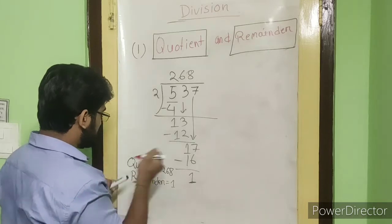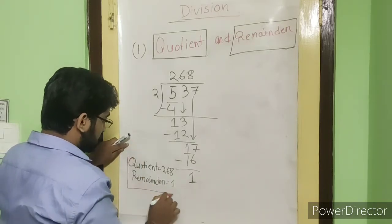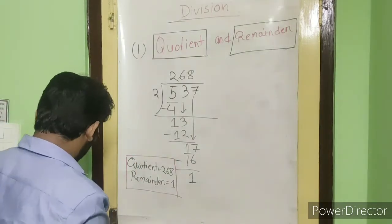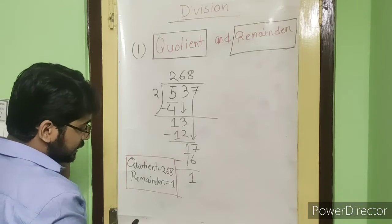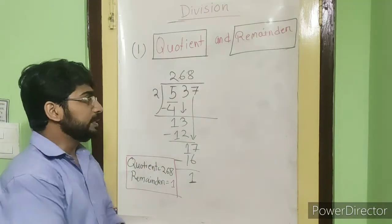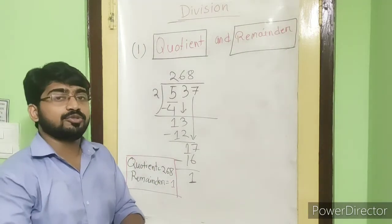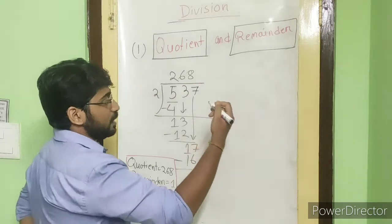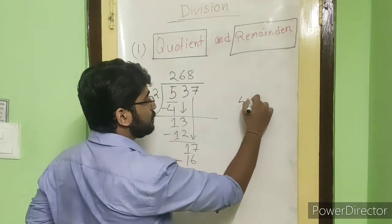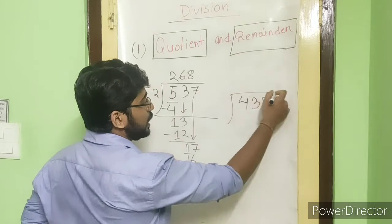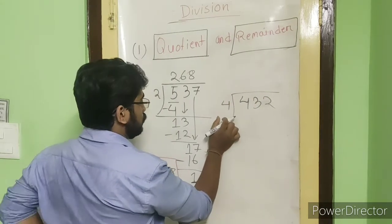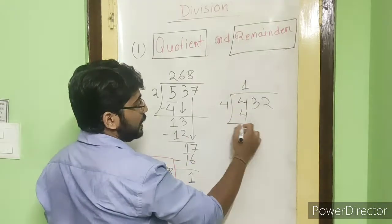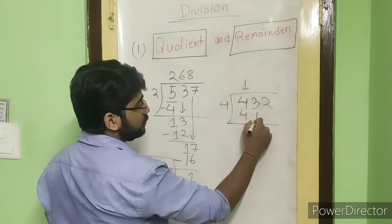Quotient equals 268 and remainder equals 1. Now, if you are asked to check whether the answer is correct or not, how will you check? In some maths — suppose I write 432 divided by 4 — 4 ones are 4, and then 3 will come here.